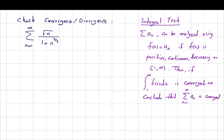So let us begin. My function here is f(x) equal to square root of x divided by 1 plus x to the power 3 halves. This function is indeed continuous and positive. You can use Desmos and graph this function.